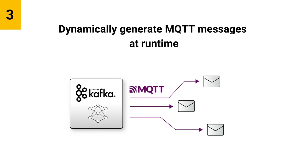Next, you can use dynamic placeholders in the HiveMQ Kafka extension to generate MQTT topics and messages based on the data extracted from Kafka records. This helps you create more flexible topic hierarchies, route messages to specific topics, and customize message payloads with relevant information.